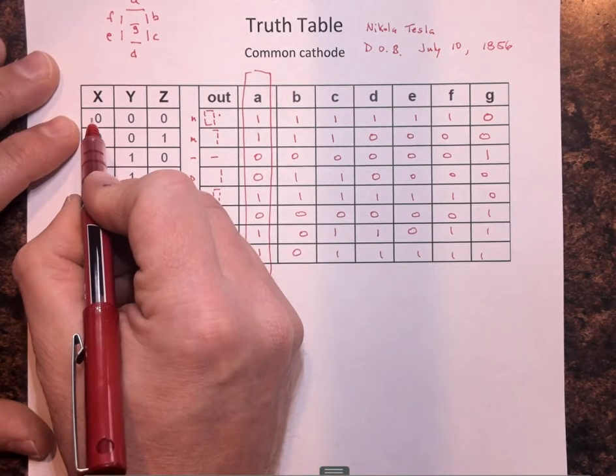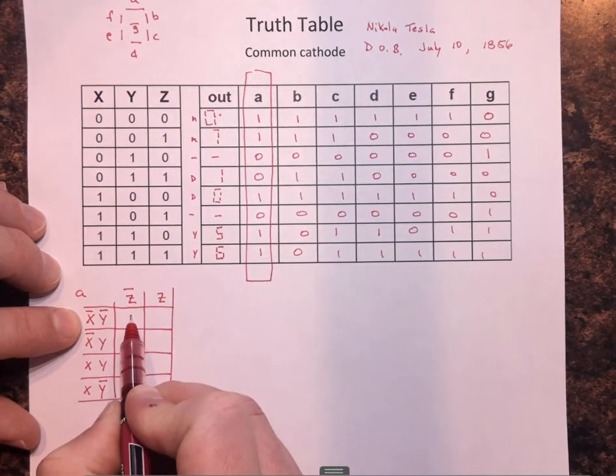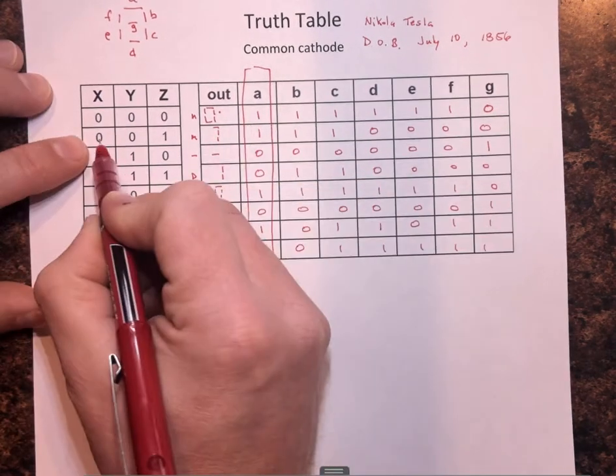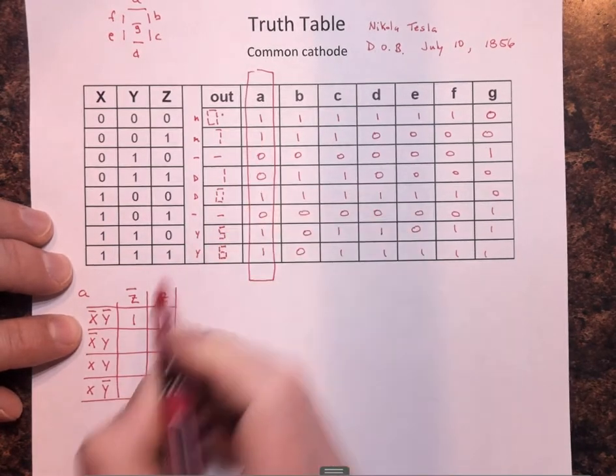Okay, so the first is not, not, not. Not, not, not is right here, and that's a one. The next one is not, not, not Z. So not, not, and then Z, and that output is a one.